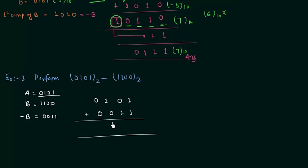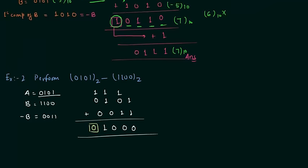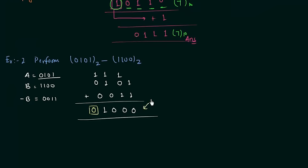Minus of b is equal to 0011 — we complemented all four bits. Now we perform the addition: a is 0101 and minus b is 0011. 1 plus 1 is 0 with carry 1; 1 plus 0 plus 1 is 0 with carry 1; 1 plus 1 plus 0 is 0 with carry 1; and finally 1. So the result of step number two is 1000, and you can clearly see the final carry is equal to 0.